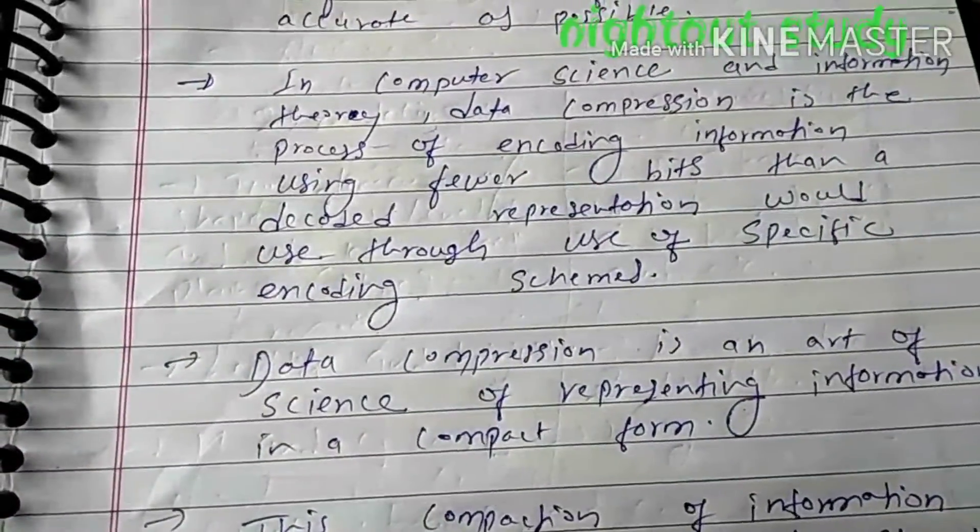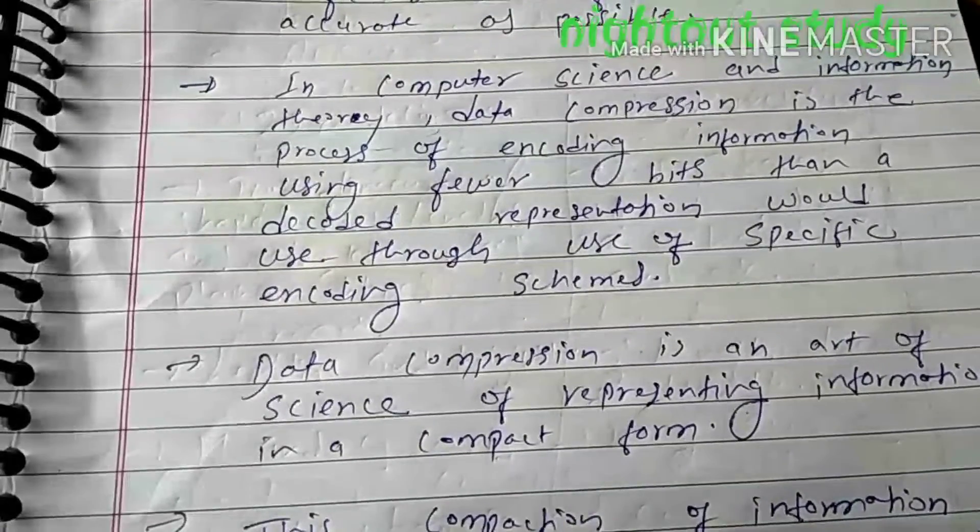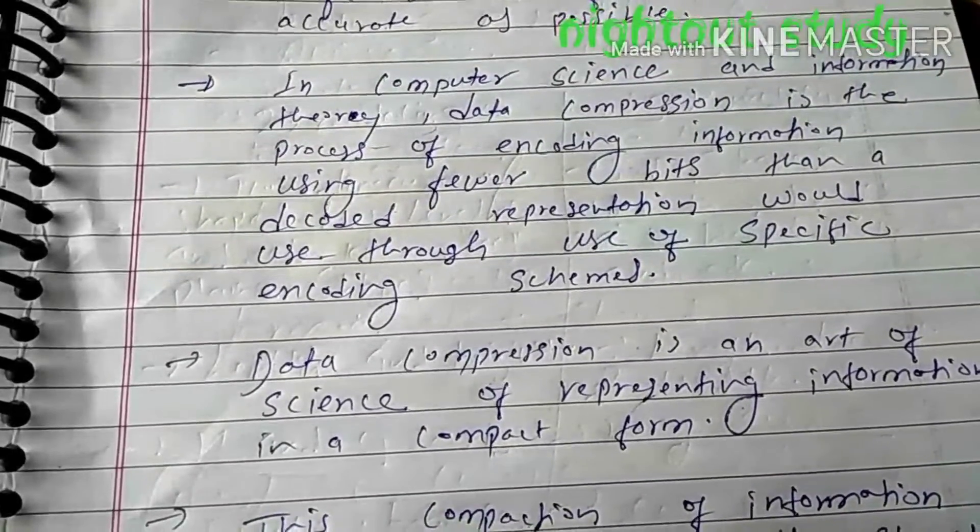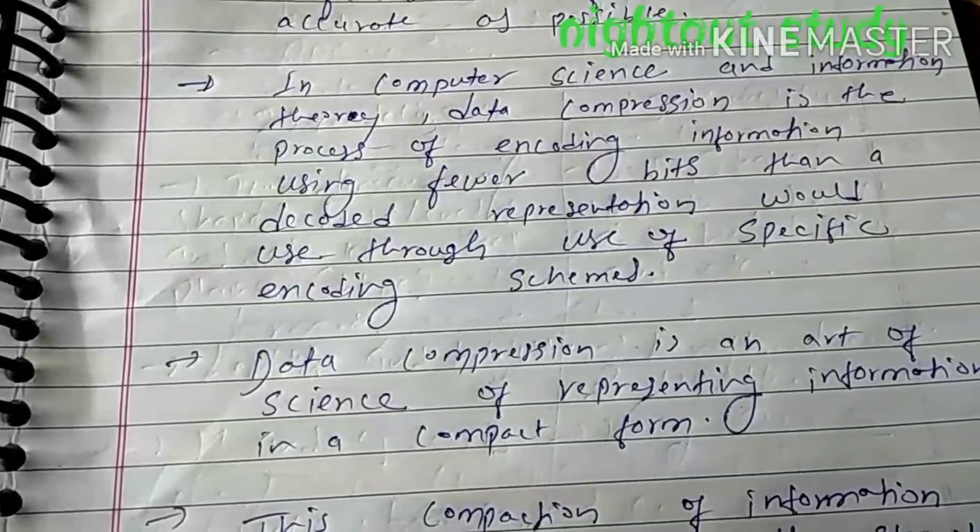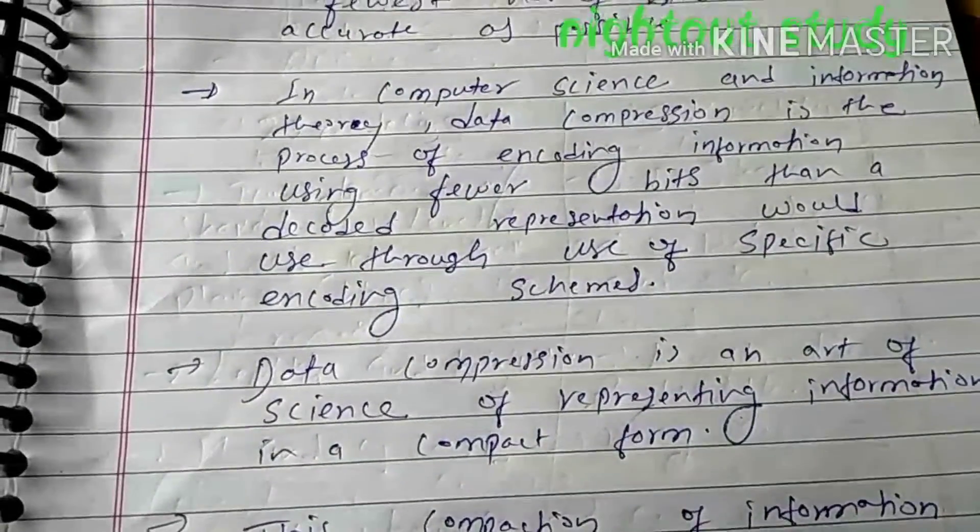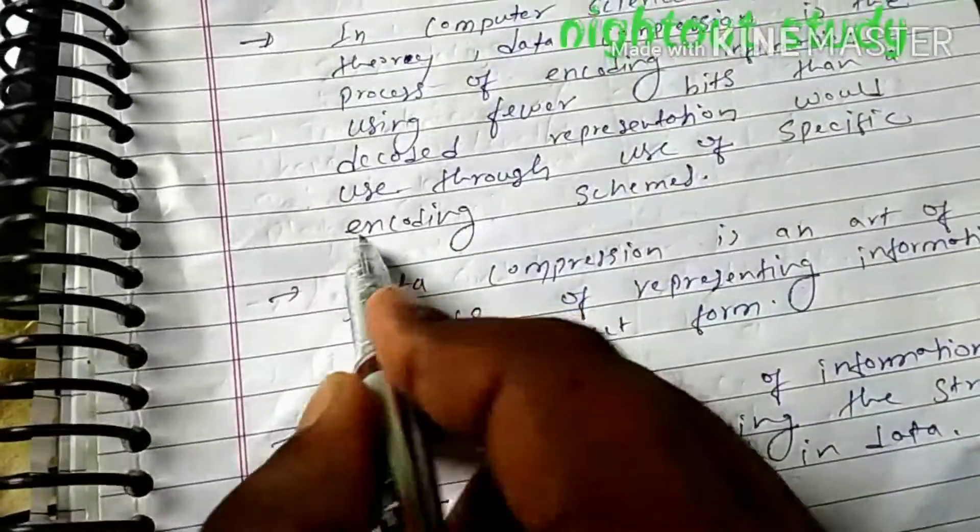In computer science and information theory, data compression is the process of encoding information using fewer bits than a decoder representation would use through use of a specific encoding scheme.